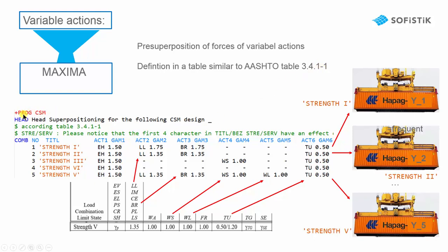We implemented an input that is similar to this table 3.4.1.1. As you see here, our program CSM, you can define a combination where you can use this strength 1, 2, 3, 4 combinations.